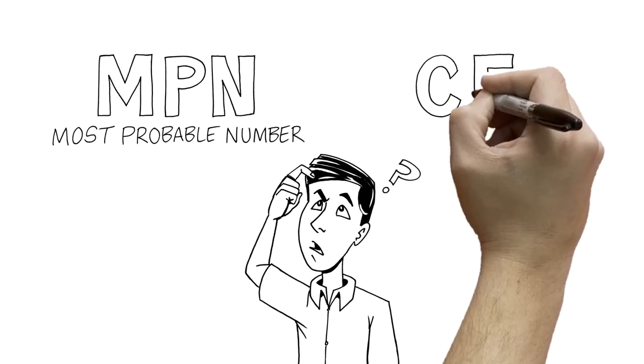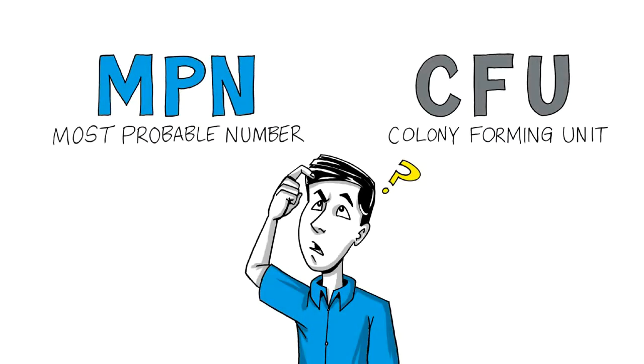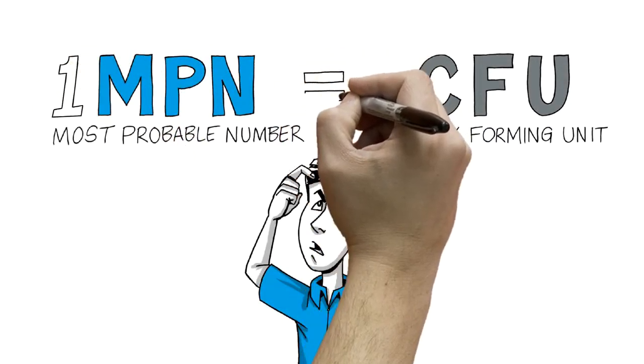An MPN is just like a CFU, or colony forming unit. Both measure the number of bacteria in a water sample. One MPN is equal to one CFU.